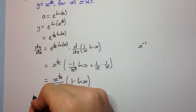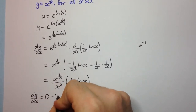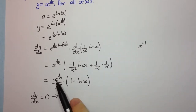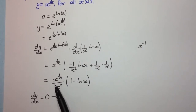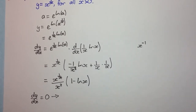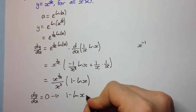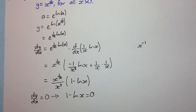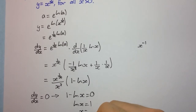Now we need to set this equal to 0. When we solve dy/dx equal to 0, there will be no solutions from the x to the power of 1 over x part of the function, because that can never equal 0. So the only thing that makes this equal to 0 is the bracket: 1 minus log x equals 0. Therefore, log x equals 1, and therefore x equals e.